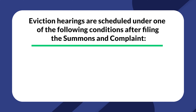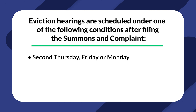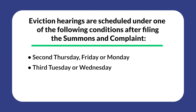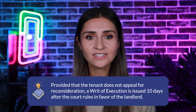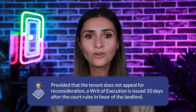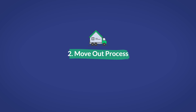The landlord needs to support the claim with evidence during the hearing, including: copy of deed and lease, rent receipts and ledgers, bank statements, witnesses, photo and video documentation of the violations, correspondence, etc. Eviction hearings are scheduled under one of the following conditions after filing the summons and complaint: second Thursday, Friday or Monday, or third Tuesday or Wednesday — usually 10 to 16 days after the summons and complaint were entered into court. Tenants have to file a written reply to the complaint no more than 7 days after the documents were entered into court. If unable to do so but they show up to the hearing, it is postponed for another 7 days. If the landlord fails to show up to the hearing but the tenant does, it is also postponed for another 7 days.